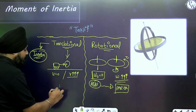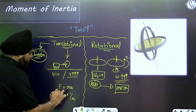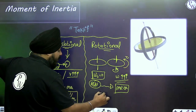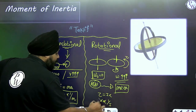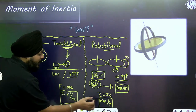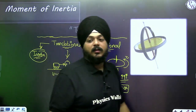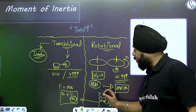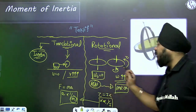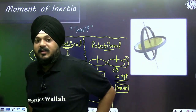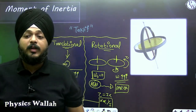In translational motion the state changes due to external force; analogously, in rotational motion the state changes due to external torque. In translational motion, if force is constant, acceleration is inversely proportional to mass (m). In rotational motion, if torque is constant, angular acceleration α is inversely proportional to moment of inertia I. So in rotational motion, I is analogous to m in translational motion.